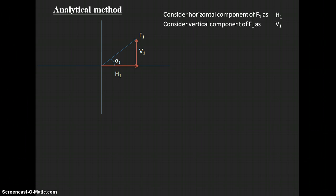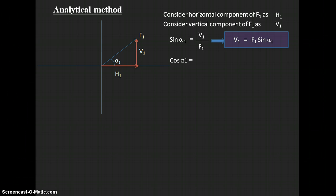Applying the sine rule: sin(α₁) = opposite/hypotenuse = V1/F1, so V1 = F1·sin(α₁). That gives us the vertical component of F1. Similarly, applying the cosine rule: cos(α₁) = adjacent/hypotenuse = H1/F1, so H1 = F1·cos(α₁). That gives us the horizontal component of F1.